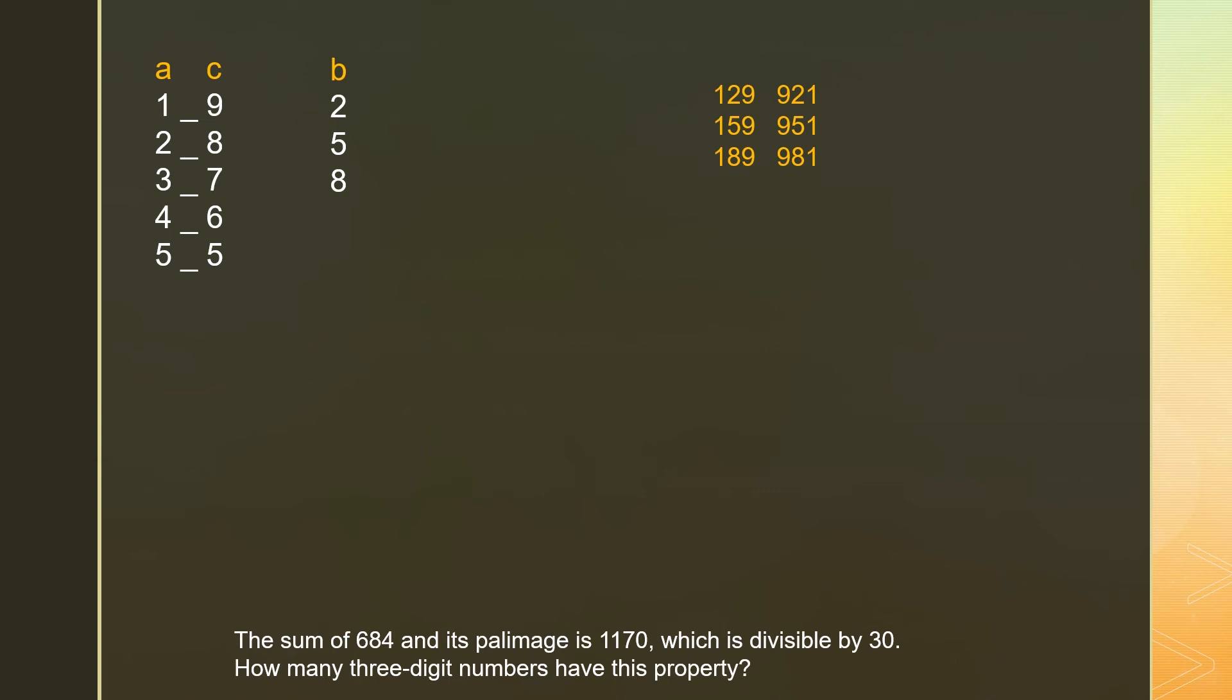For 2 and 8, we can have another 6 numbers. 3 and 7, another 6. 4 and 6, another 6 numbers. But for 5 and 5, since they are the same, we can only make 3 numbers.